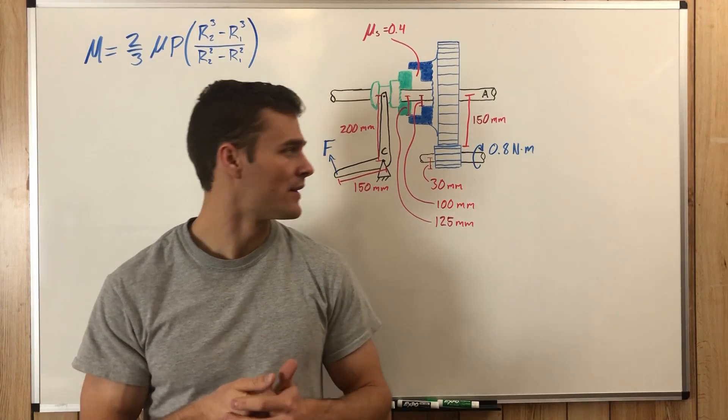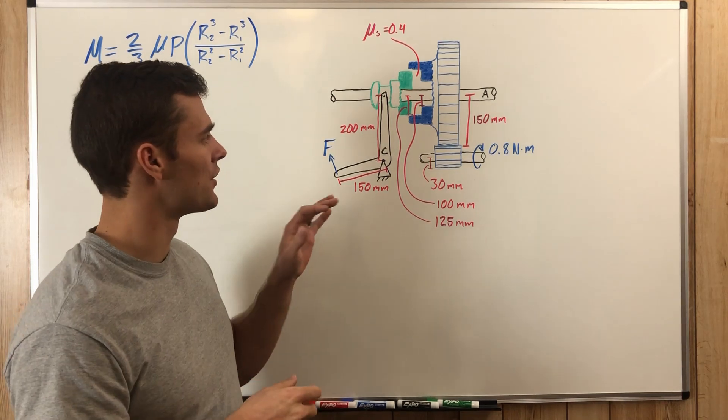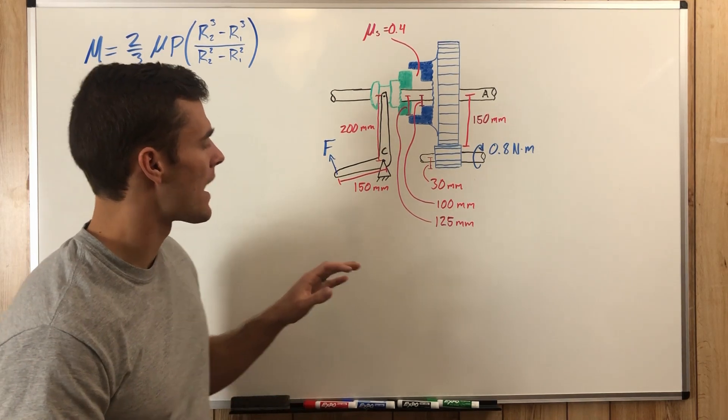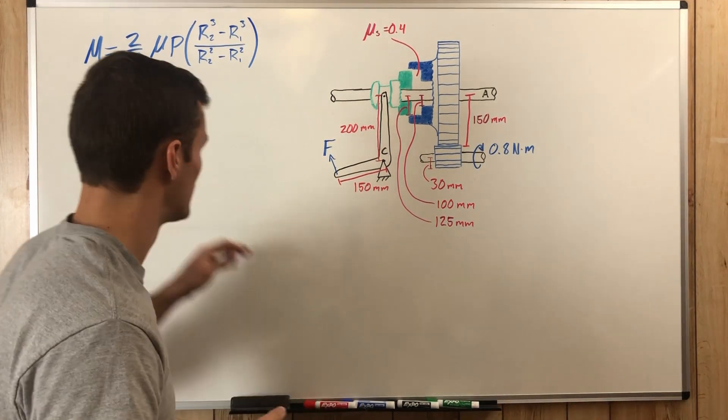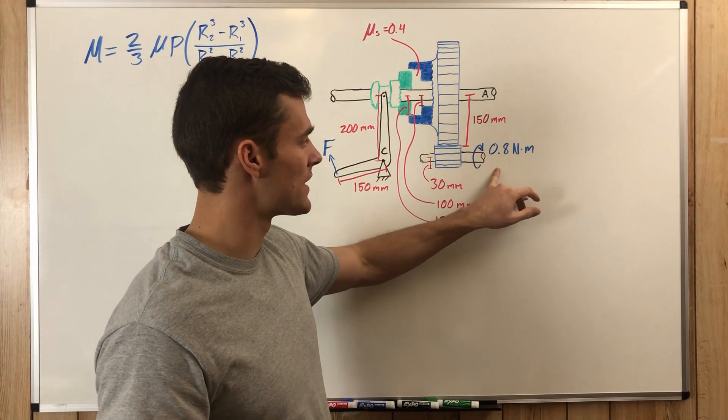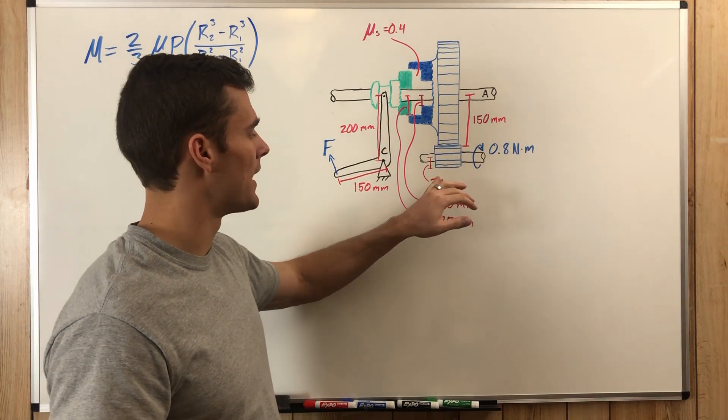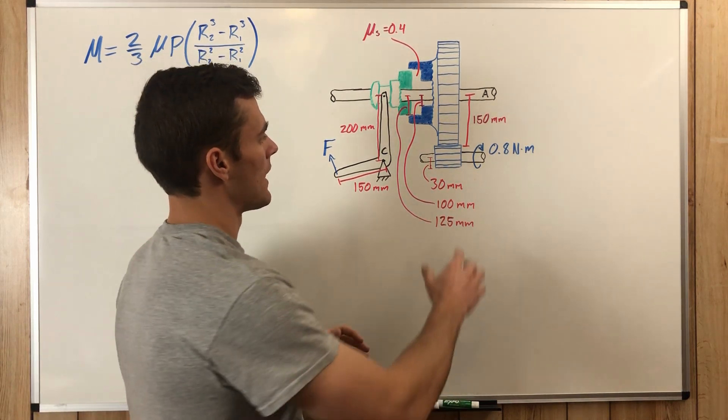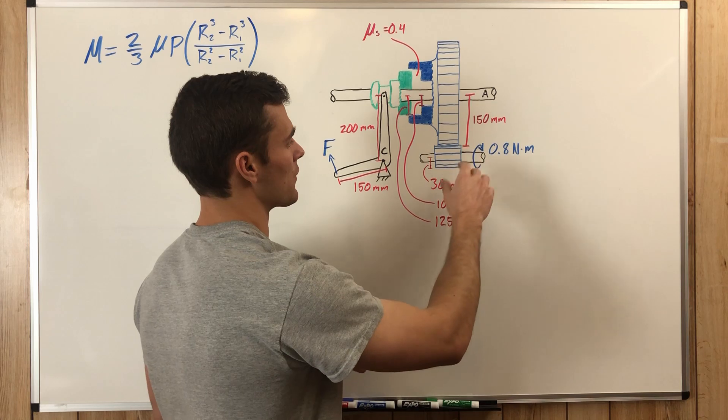The first thing we want to do is understand how to find the variables we need to find. We have our moment here and it's easy to see that it has to do with this moment applied, but we need to figure out how it transfers from this gear over to this gear and thus the shaft.